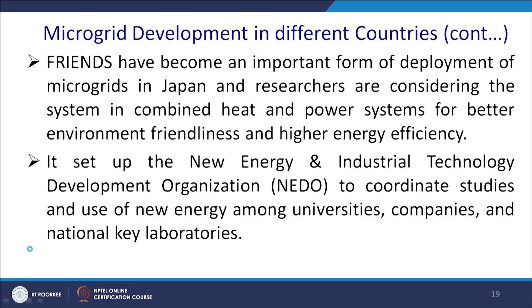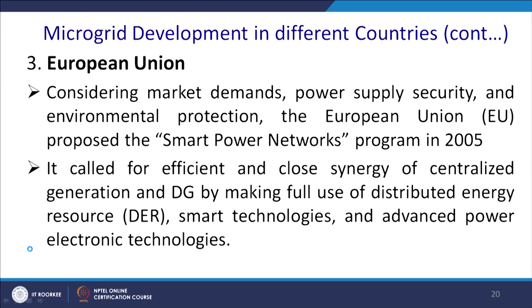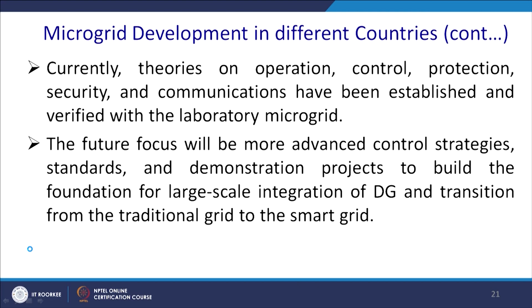The European Union, considering market demand, power supply security, and environmental protection, proposed a Smart Power Network Program in 2005. It called for efficient integration of centralized and distributed generation using distributed energy resources (DER), smart technologies, and advanced power technologies. Currently, theories of operation, control, protection, security, and communication have been established and verified in laboratories for microgrids. The future focus will be on more advanced control strategies, standard demonstration projects, large-scale integration of distributed generation, and transition from the traditional grid to the smart grid.